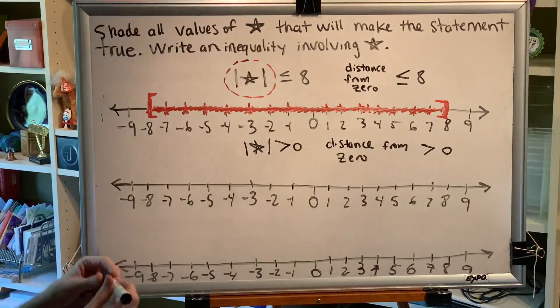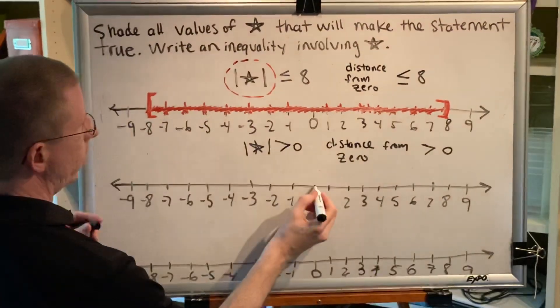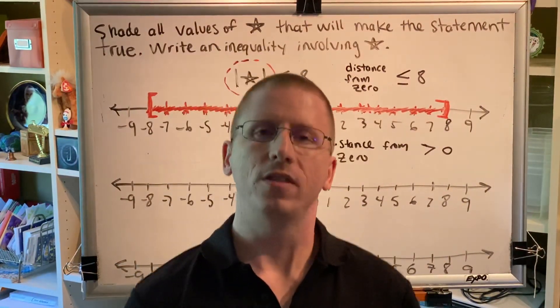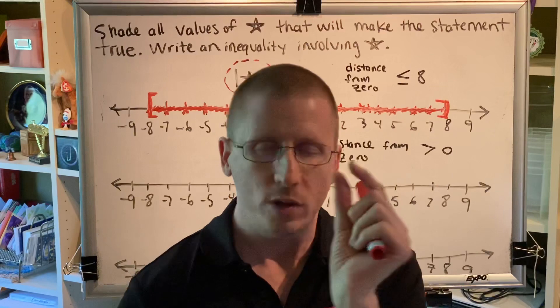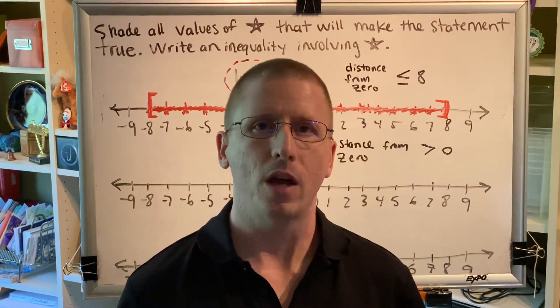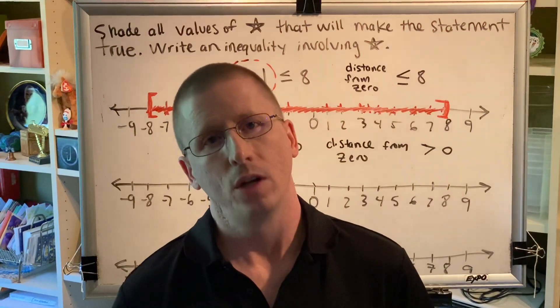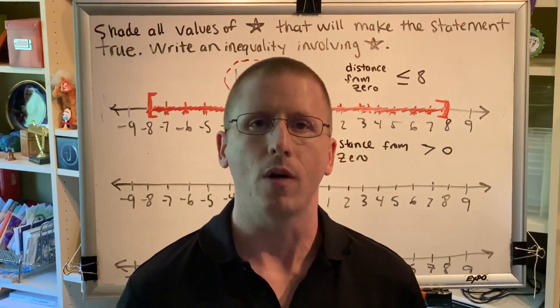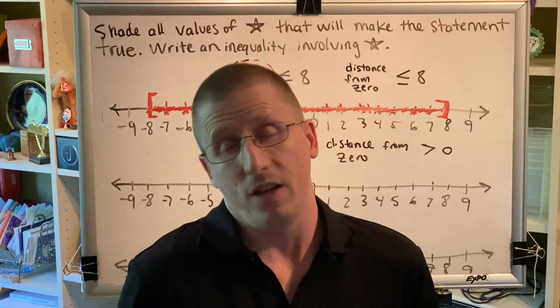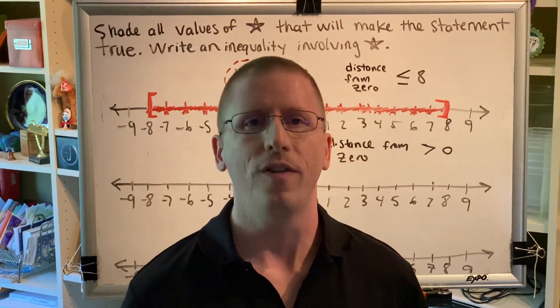Well, think about what that means. Let's say you're standing here at 0. The moment you leave 0, you're more than 0 steps away from 0. Even if you take just the tiniest, tiniest bit of a step. If you take just a half step and you're at the number 0.5, well, you're now half a step away from 0. You're 0.5 steps away from 0. And 0.5 is more than 0. So we have to include the value 0.5.